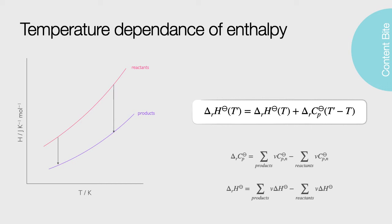Other versions of this equation exist which use calculus to better model this over large temperature ranges, accounting for variation in heat capacity. But given most chemistry occurs in solvents which have a limited practical temperature range, I've chosen to just consider the simpler model of Kirchhoff. Since we are using enthalpy, I must use the heat capacity at constant pressure, and we can adjust the internal energy for changes in temperature using the heat capacity at constant volume in a similar way.